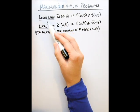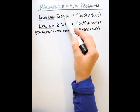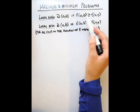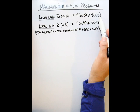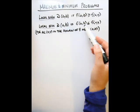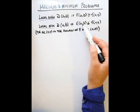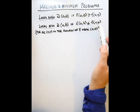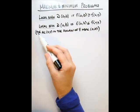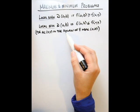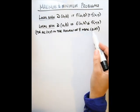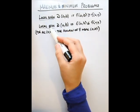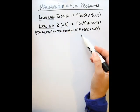A function has a local maximum value at a point if the function value at that point is greater than or equal to all other function values near that point. It's a local min if exactly the opposite is true — the function value at that point is less than or equal to all other function values near that point. This applies for all x and y in the domain of f near that point, and this distinction will affect the difference between a local max or min and an absolute max or min.